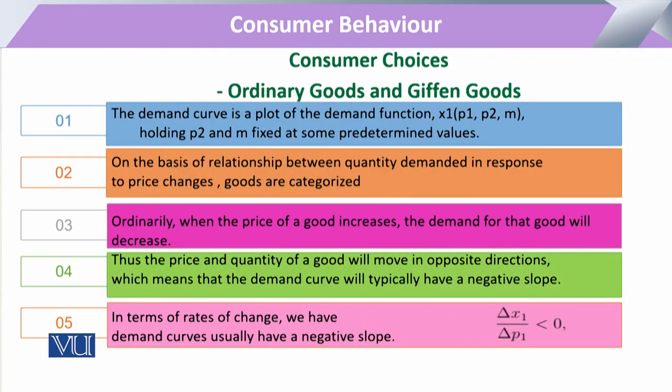Keeping in view the change in price, there are mostly commodities that follow the law of demand — their demand increases with a decrease in price, and these are called ordinary goods. There are also certain goods that are exceptions to this behavior, where demand increases with an increase in price, and these are called Giffen goods.